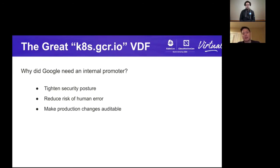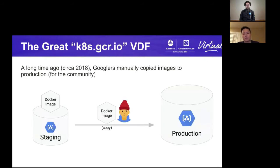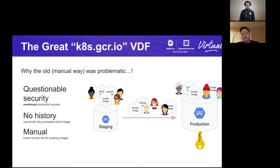There was basically a mandate saying we need to lock this down to very few people, while not making those 60 to 70 people unable to push images on their own. So we created an internal bot that does the pushing of images from staging to production for the Googlers. This also made it better in that there was less human error involved, and also made the changes — who pushed which image — auditable in the source code history. Circa 2018, before the internal promoter, people were manually copying images from staging to production, which was not a great idea.